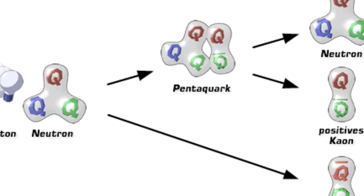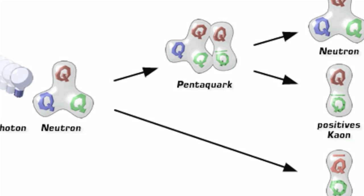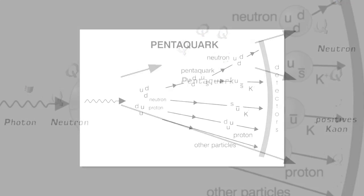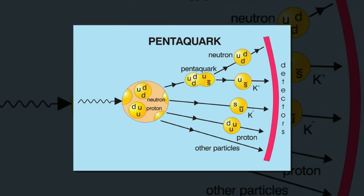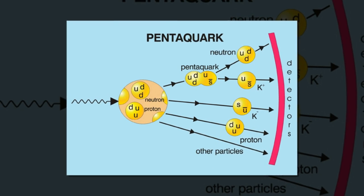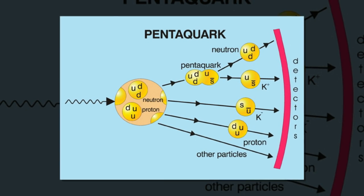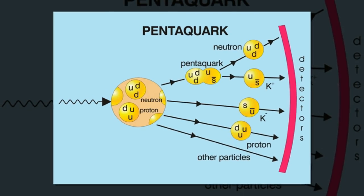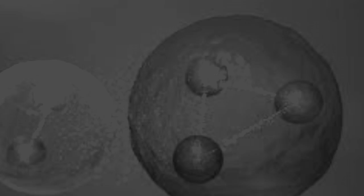The short-lived pentaquark was spotted by researchers analyzing data on the decay of unstable particles in the LHCb experiment at the Large Hadron Collider at CERN, Europe's particle physics laboratory near Geneva.